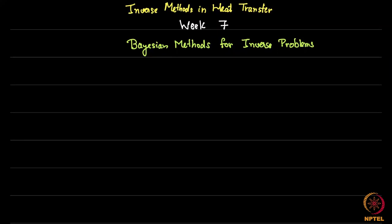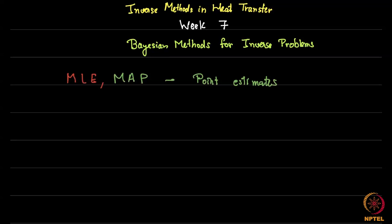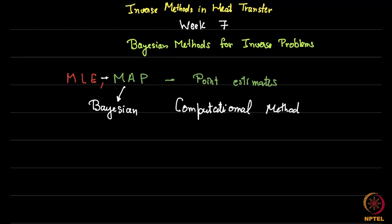Welcome back. We are in week 7 of inverse methods in heat transfer. In the last few videos, we saw methods called maximum likelihood estimation as well as maximum a posteriori estimation. Both these are known as point estimates. In this video, we want to go from MLE to MAP to Bayesian, and also look at a simple computational method to calculate these, which we will make more sophisticated later in this week.